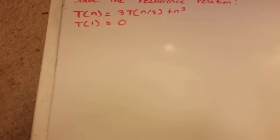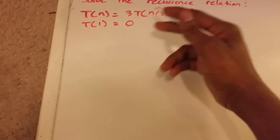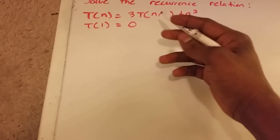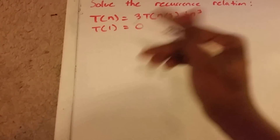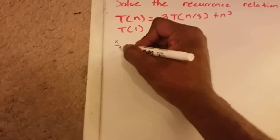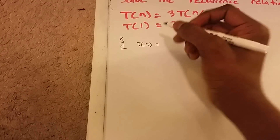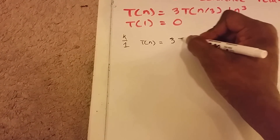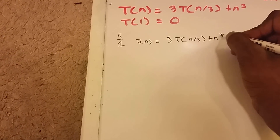Now, this can be easily solved using the master theorem, and I would suggest using it, but we're going to do the iteration method here. So let's start off — we have our k value, so k is going to equal 1, and we have T of n equals 3 times T of n divided by 3, plus n cubed.